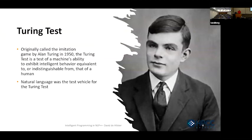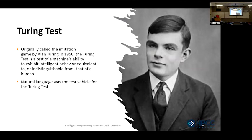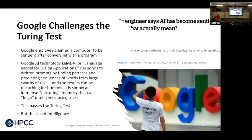If you look back, those of you who know the Turing test — it was named after Alan Turing and first called the imitation game. The idea was to test a machine's ability to exhibit intelligent behavior equivalent to or indistinguishable from that of a human. And the test was really a natural language test, where you would sit at a teletype and get questions and answers. So language and intelligence were already linked there.